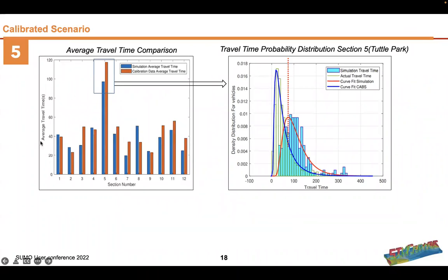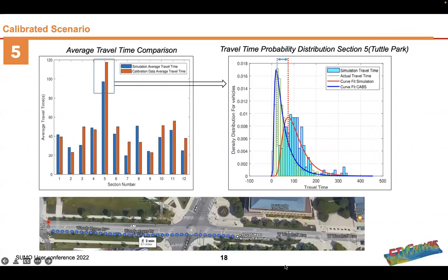We observed that for a number of sections we had some errors with respect to the calibration data. Those errors were because of assumptions in our simulation scenario — we don't have a pedestrian dataset, and the GPS data logging was not very accurate. Those things can be improved if we have much better GPS data logging frequency, not just from CABs but from other vehicles as well. Also, if we can have pedestrian count movements, which actually affect travel time, that will also improve data accuracy.